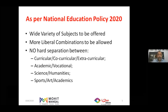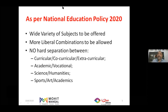Most importantly, under the New Education Policy there will be no hard separation between curricular, co-curricular, or extracurricular activities, and no separation between academic and vocational subjects. Science and humanities will be treated at an equivalent level. Combinations like Physics with History or Chemistry with Sociology will be allowed, and there will be no hard separation between sports, art, or academics.